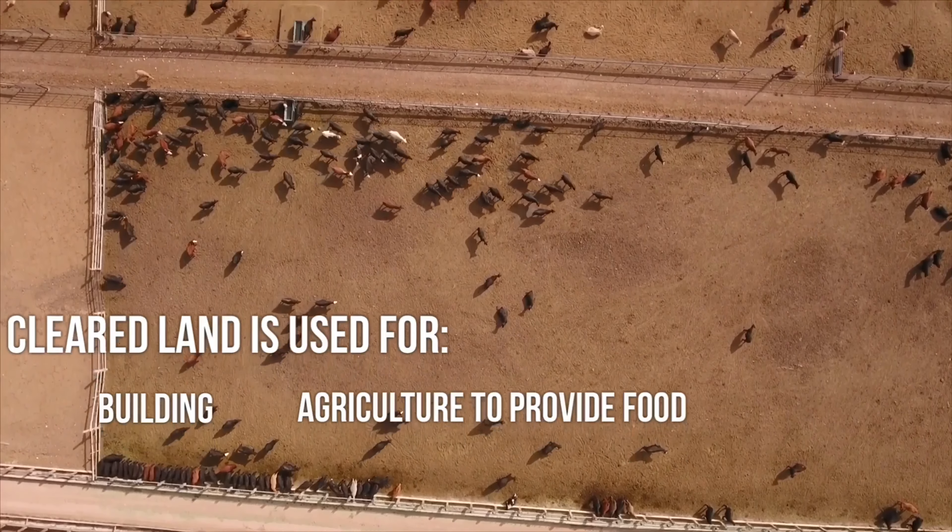The fields you can see now are paddy fields where rice is grown. And actually, the bacteria in the waterlogged soils produce methane in large quantities. Again, that's increasing the amount of methane in the atmosphere.